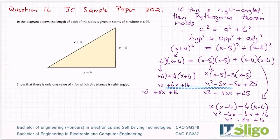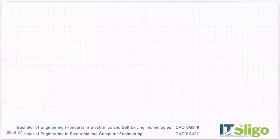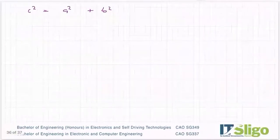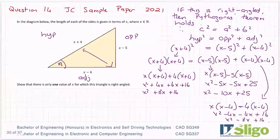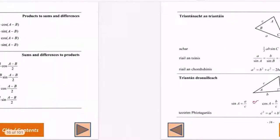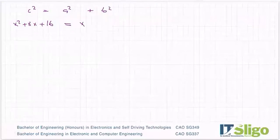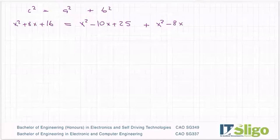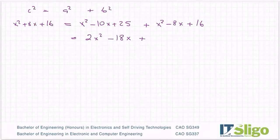So again, what am I doing? I'm c² = a² + b². So what did I get when I multiply the hypotenuse squared? x² + 8x + 16. And that's equal to a² is x² - 10x + 25, and b² was x² - 8x + 16. Okay, let's tidy up this right hand side. I have 2x² - 18x, and I have plus 25, 35, 41.